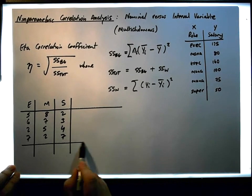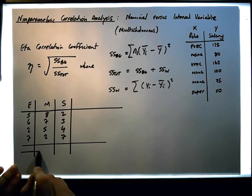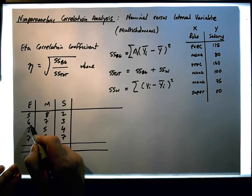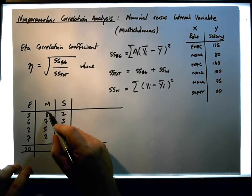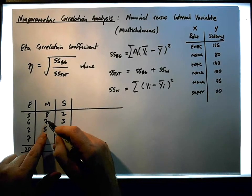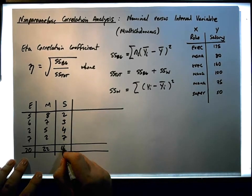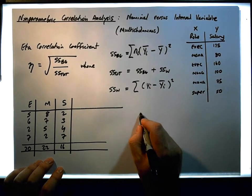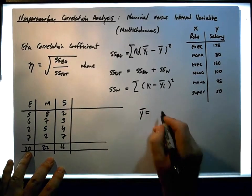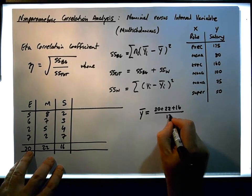So here are our observations. What we're going to do is calculate the overall mean, but let's first sum up these columns. So we have 5 and 6 is 11, and 2 is 13, and 7 gives us 20. We have 8 and 2 gives us 10, and 5 and 7 is 12, giving us 22. And we have 16 here. So the overall mean, y-bar total, is 20 plus 22 plus 16 divided by 12 values.